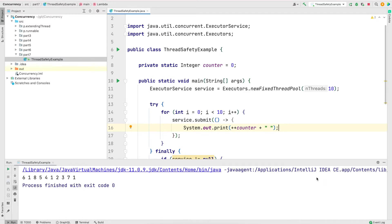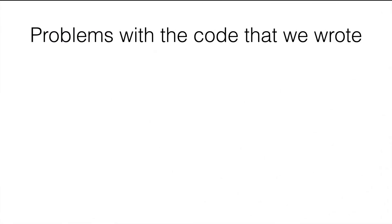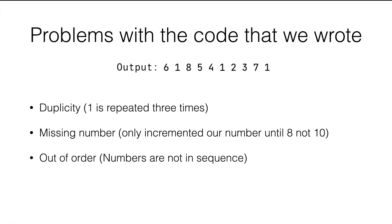The output we see is very different from what the program looks like. Let's jump into the slide to see what is the problem. This program has three different problems. The first problem is duplicacy — there are multiple ones in the output. The second problem is missing numbers: we were expecting the counter to reach 10, but the highest value we see is 8, so 9 and 10 are missing. The third problem is the output is out of order — threads are not incrementing in sequence.